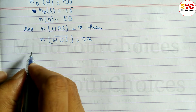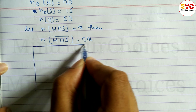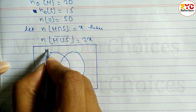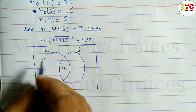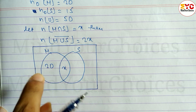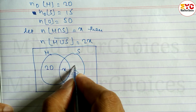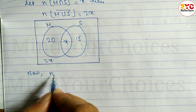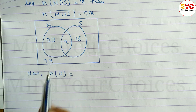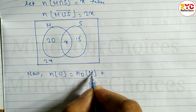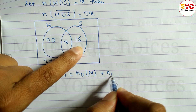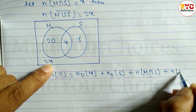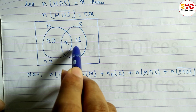Now we draw the Venn diagram. The intersection region represents M∩S. Only M is equal to 20, so write 20 here. Only S is equal to 15, so write 15 here. Outside the circles we write 2x for students who do not like either subject.